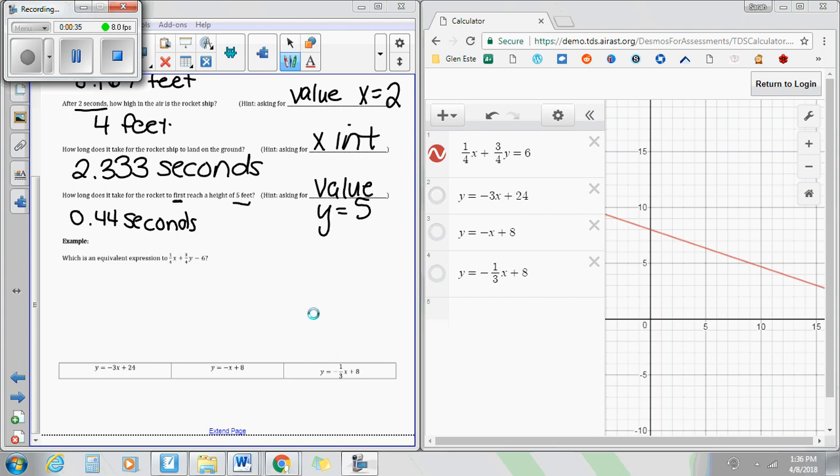I'm going to turn on the first one down here, negative 3x plus 24. You'll notice if I turn on that graph that I now have two separate lines. So these two are not equivalent expressions.